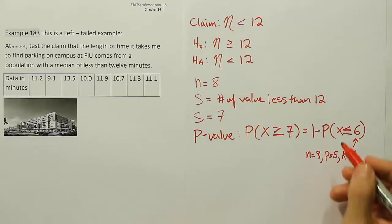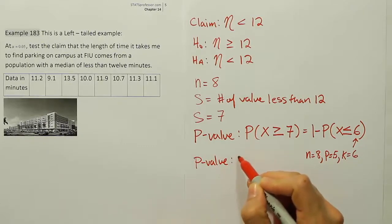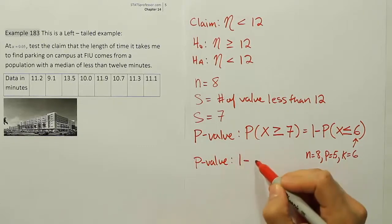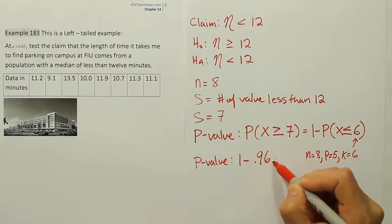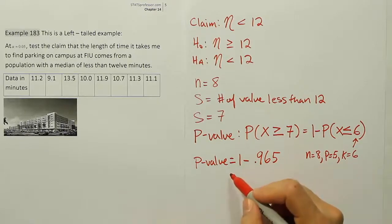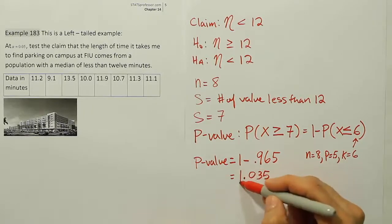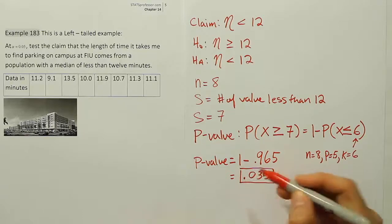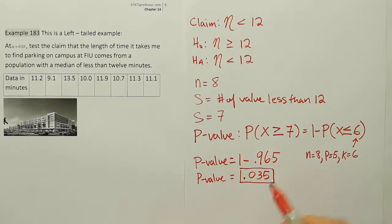So we found the answer from our table here to be equal to... Let's write the p-value here. p-value is equal to 1 minus, and the value we got from our table for this value is 0.965. So our p-value is equal to 1 minus 0.965. So our p-value ultimately ends up being 0.035, or three and a half percent. So that's your p-value.